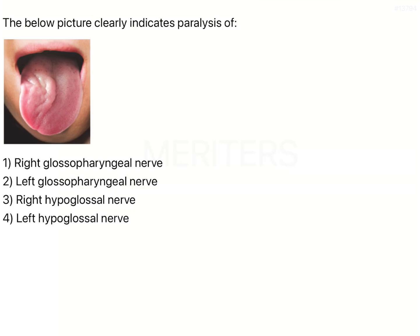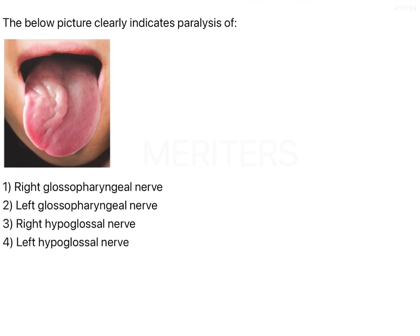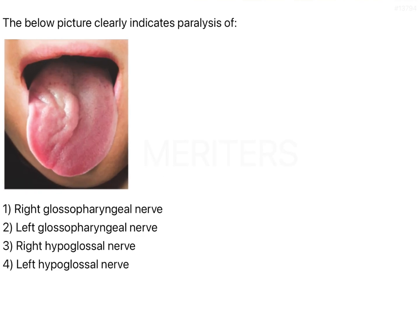The question is, the picture below clearly indicates paralysis. If you can notice over here, the tongue has been pulled out, and after pulling out the tongue, a part of the tongue has been deviated to one side. In this image, since it is a mirror image, this is going to be your right side and this is going to be your left side.